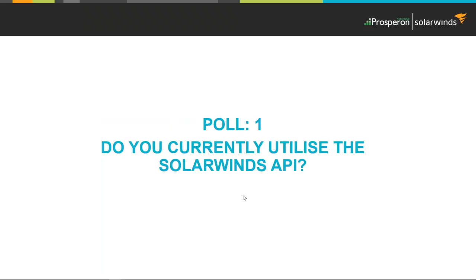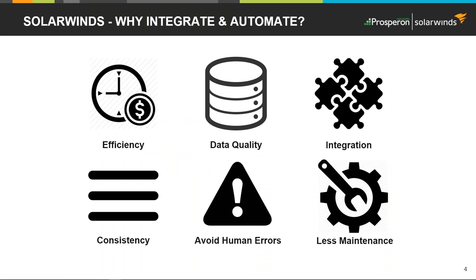Coming back to the slide deck — here we have some reasons for automation. DevOps is clearly an area of key interest, with operational teams actively getting involved in automating and performing integrations between systems. The value compared to the time and effort to put these in place needs to be identified. Key drivers include efficiency and data quality — data quality and human errors are very significant ones. Things like custom property data control are not always consistent or clean.